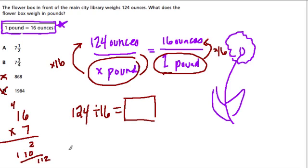So 16 times 7 equals 112. We're trying to get to 124. So what's 124 minus 112? Well, that equals 12.